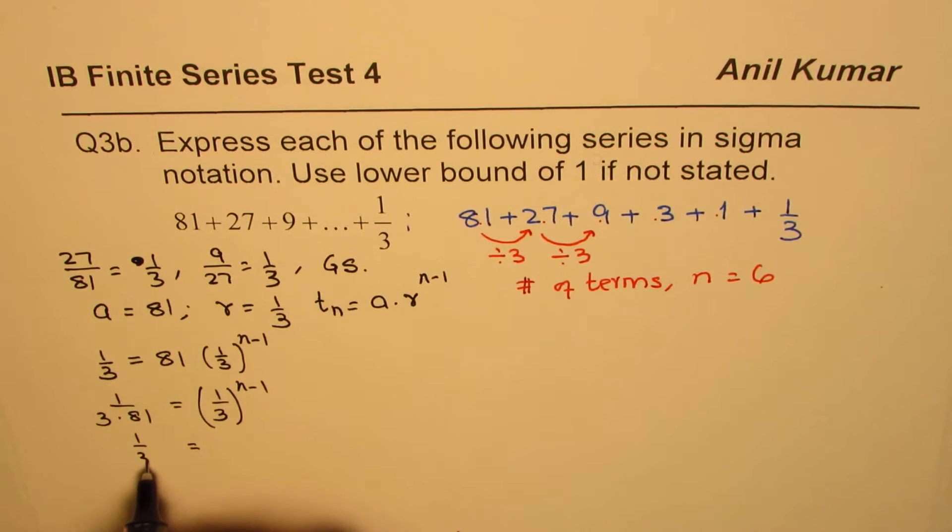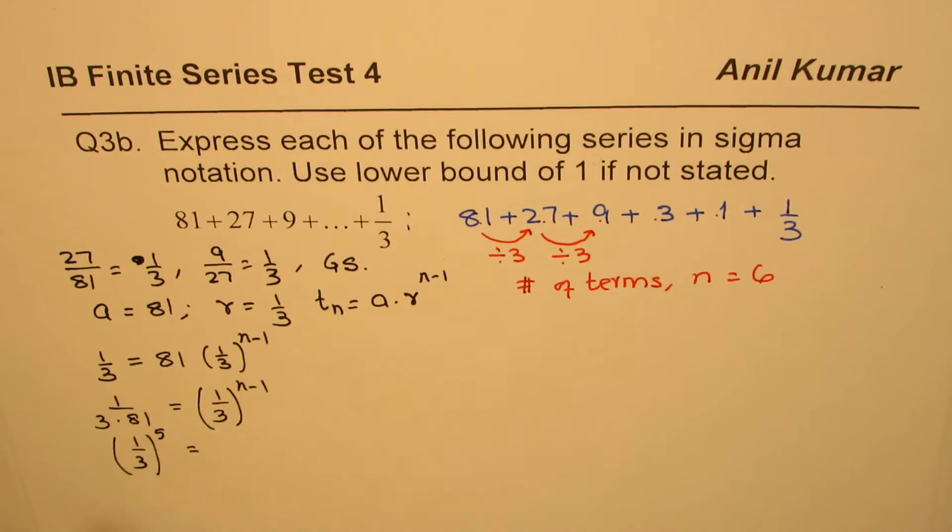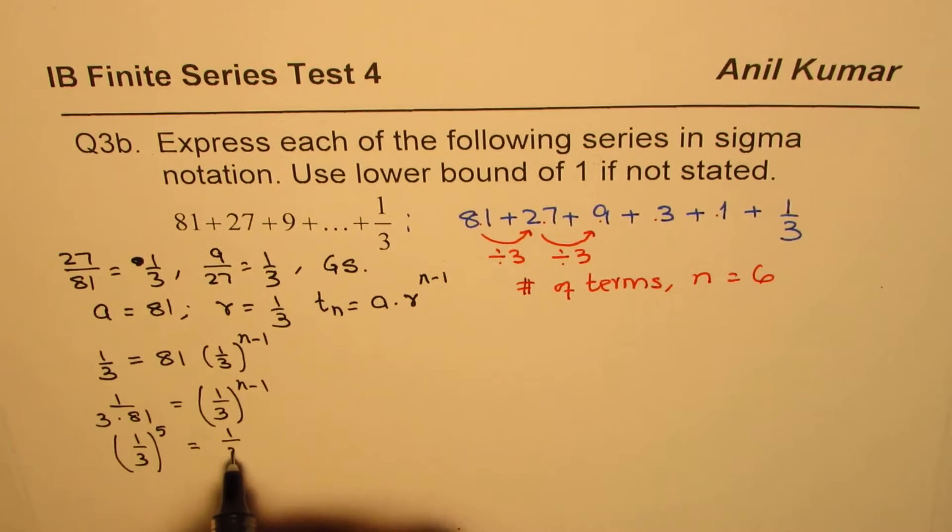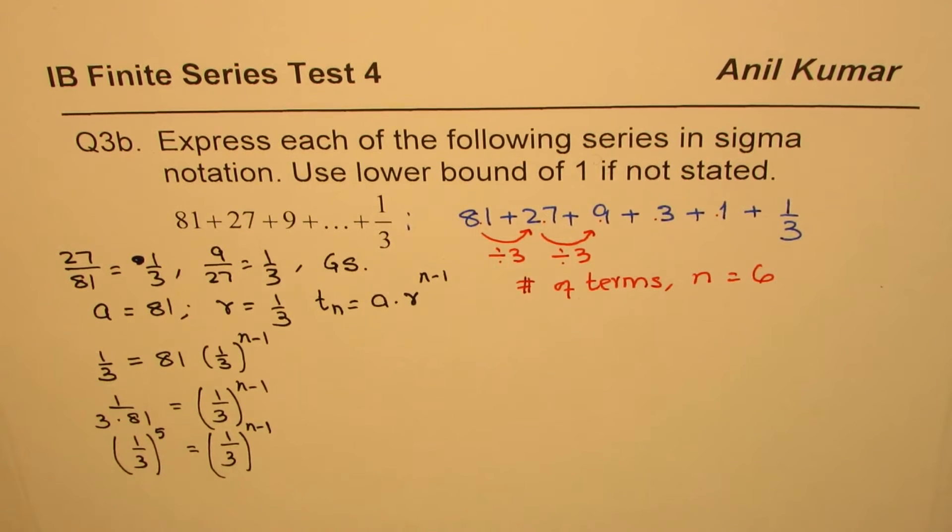This could be written as 1 over 3 to the power of 5. You know, 81 is 3 to the power of 4 and 3 is 3 to the power of 1. So when you add them, you get 1 over 3 to the power of 5. And so we know 1 over 3 to the power of n minus 1 equals 1 over 3 to the power of 5.